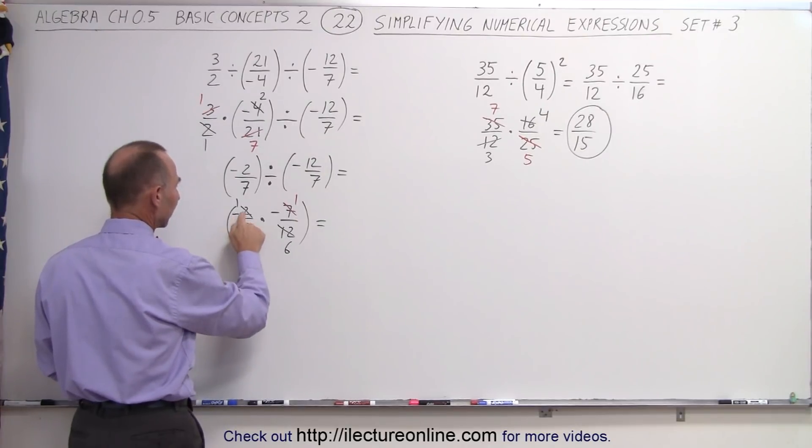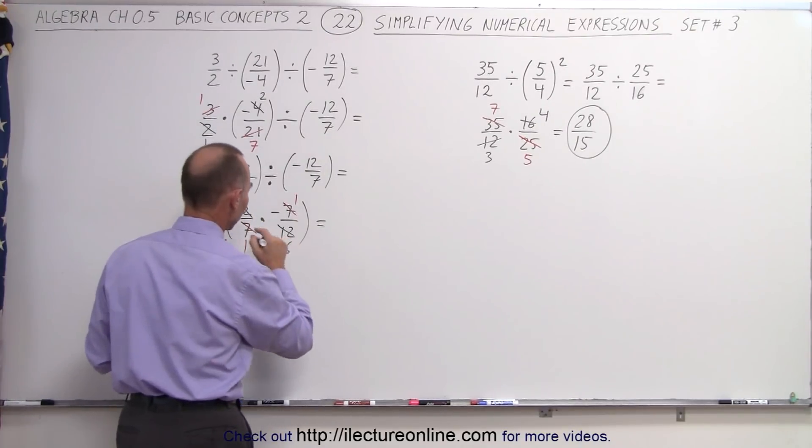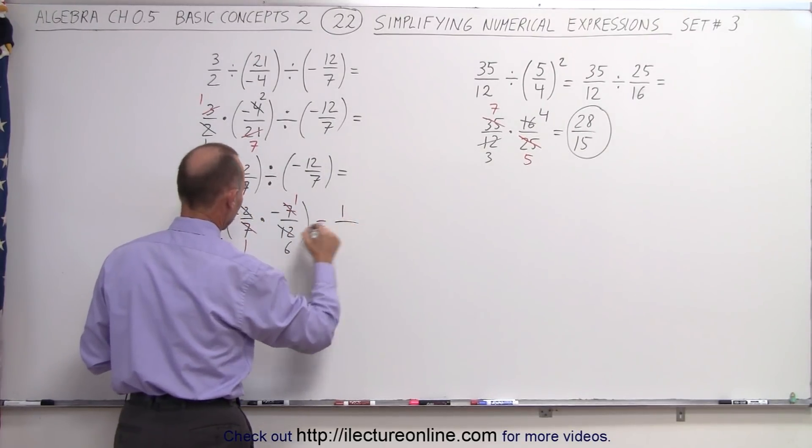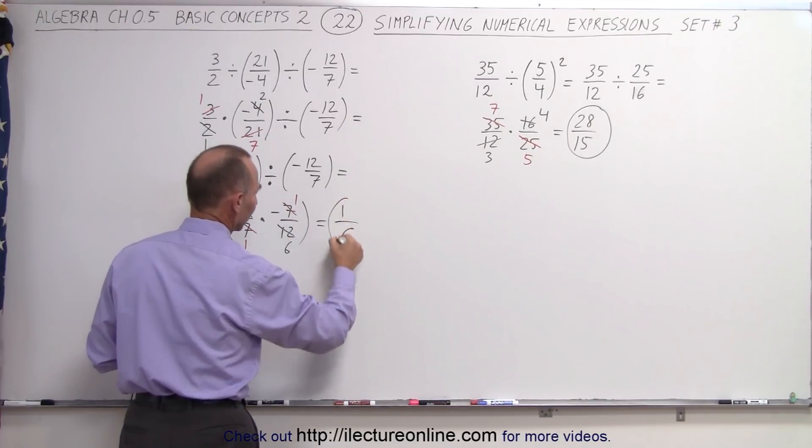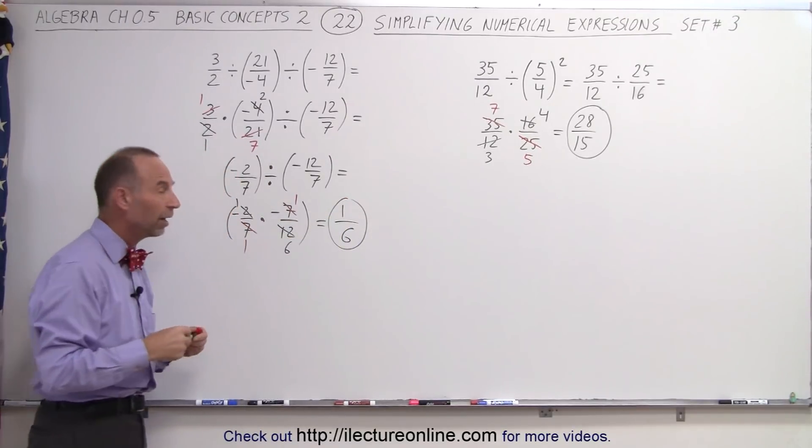And again, the negative cancels out the negative. And this leaves us with a 1 times 1 divided by 1 times 6. And that's the final reduced form of that expression.